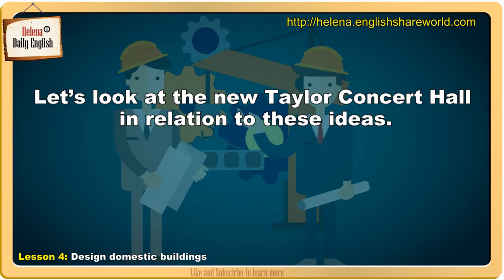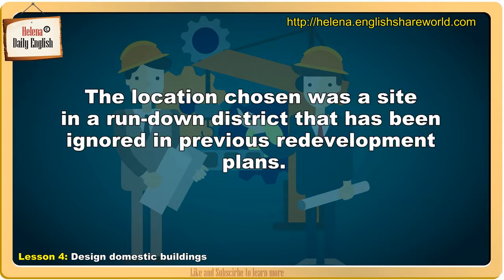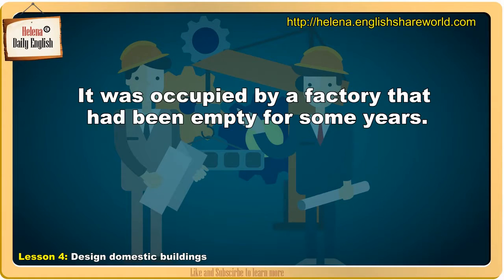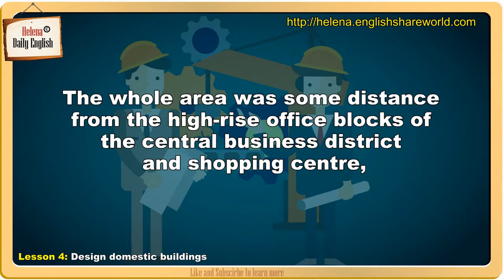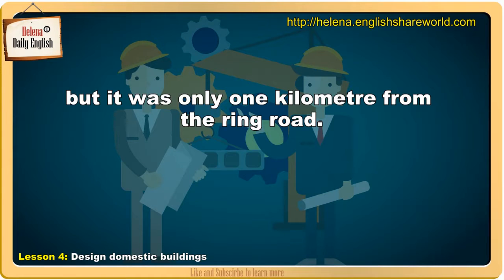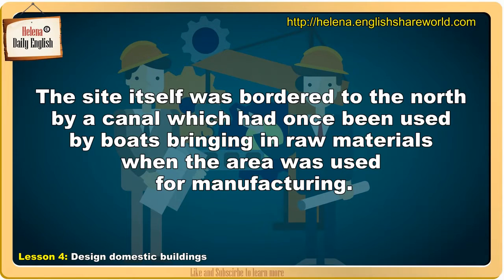Let's look at the new Taylor Concert Hall in relation to these ideas. The location chosen was a site in a run-down district that had been ignored in previous redevelopment plans. It was occupied by a factory that had been empty for some years. The whole area was some distance from the high-rise office blocks of the central business district and shopping centre, but it was only one kilometre from the ring road. The site itself was bordered to the north by a canal, which had once been used by boats bringing in raw materials when the area was used for manufacturing.